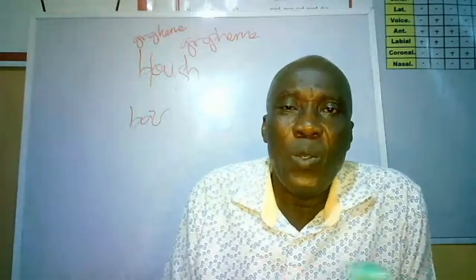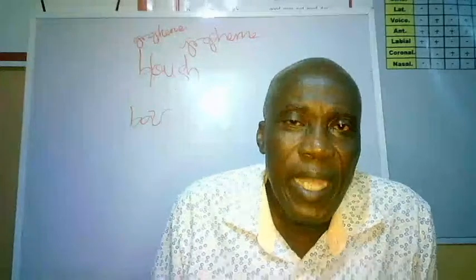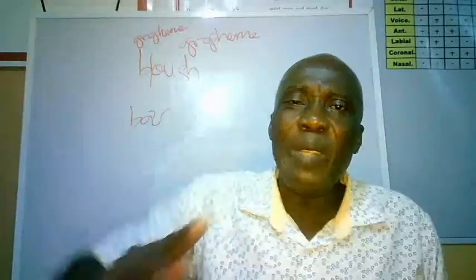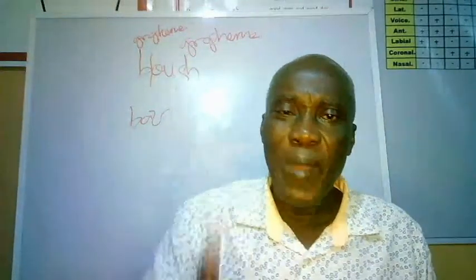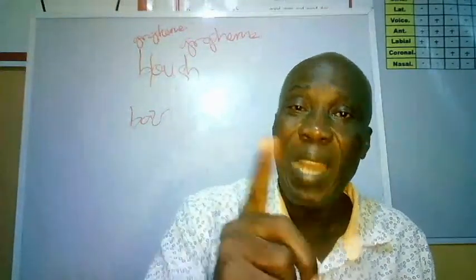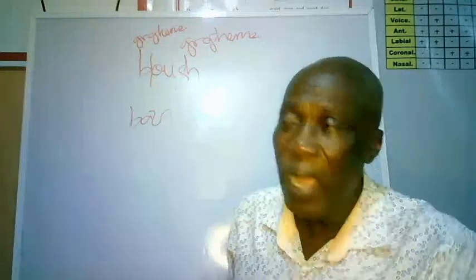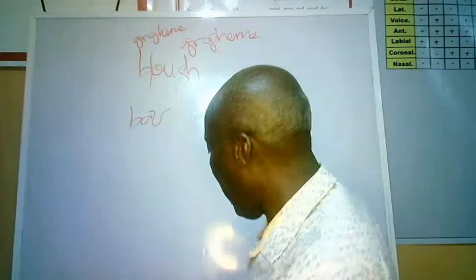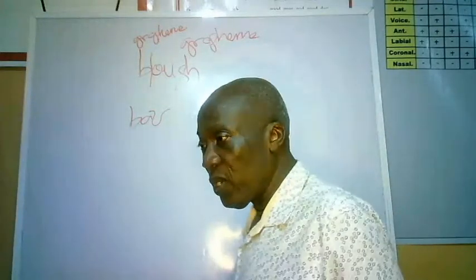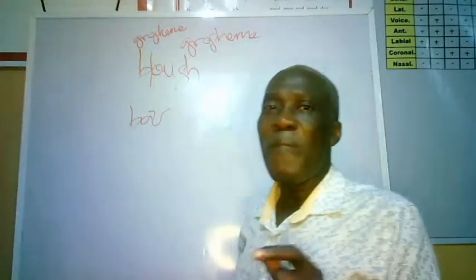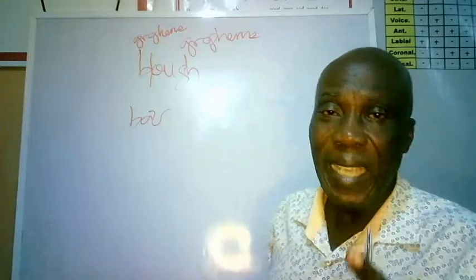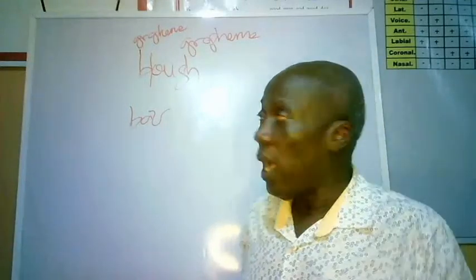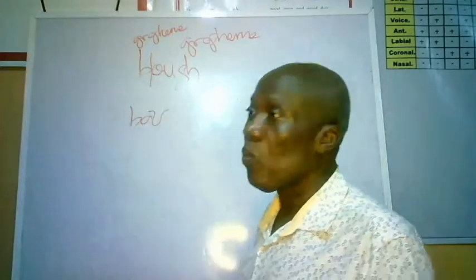Grapheme is an umbrella word. Whether it is two or three letters, so long as they represent only one sound, we refer to them as a grapheme. However, it is possible that in some situations you may find just one letter representing a sound, and so we still refer to it as a grapheme.